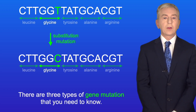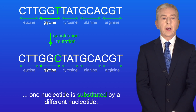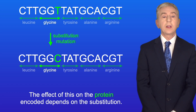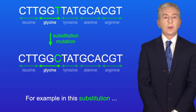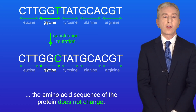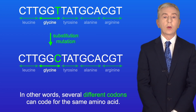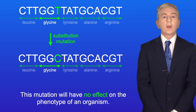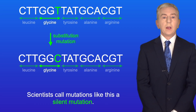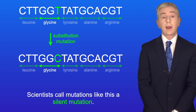There are three types of gene mutation that you need to know. In a substitution mutation, one nucleotide is substituted by a different nucleotide, and the effect of this on the protein encoded depends on the substitution. For example, in this substitution, the amino acid sequence of the protein does not change. That's because the genetic code is degenerate — several different codons can code for the same amino acid. So this mutation will have no effect on the phenotype of an organism. Scientists call mutations like this a silent mutation.